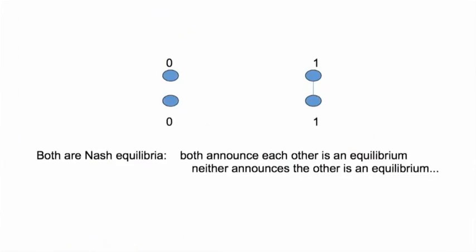Imagine that we're in a setting where there are just two individuals. If they're separate they get a value of zero, and if they're connected they get a value of one. Now we have a game where they simultaneously announce whether they're willing to form the relationship.